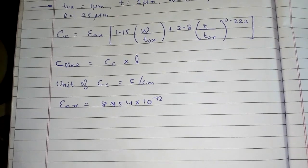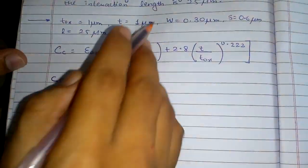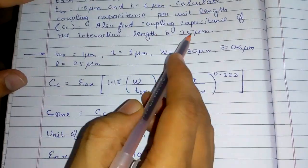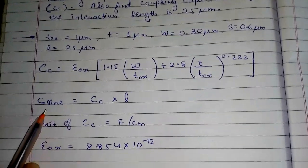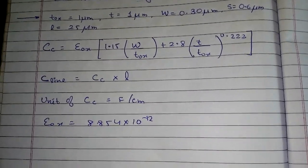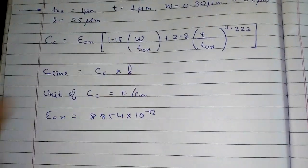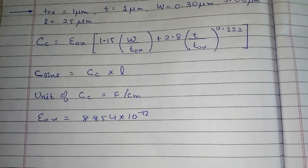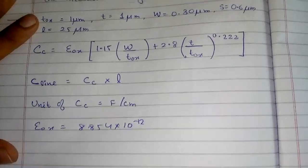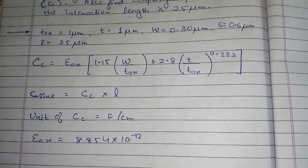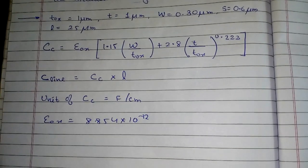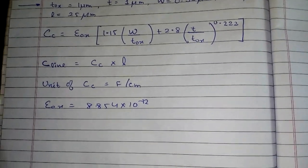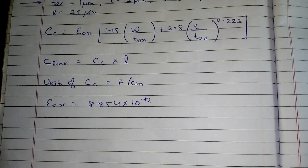Whatever answer that you get, you also have to find this coupling capacitance if the interaction length is given. So that is nothing but C_line. C_line is equal to Cc, that is coupling capacitance that you got, multiplied by l. l is the length; here in the question it is given as 25 micrometers. Now the unit of coupling capacitance is F per centimeter, that is farads per centimeter.